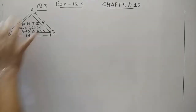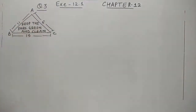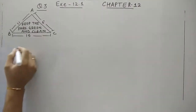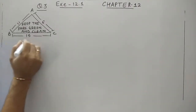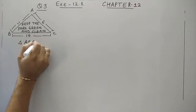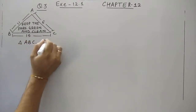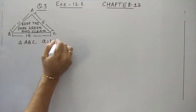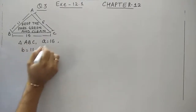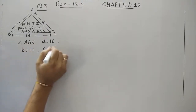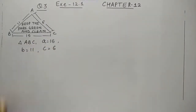So obviously we have to find out the area where they have written it. We will consider these 3 sides as triangle ABC. All 3 sides are given. To find out the area, we will use Heron's formula.